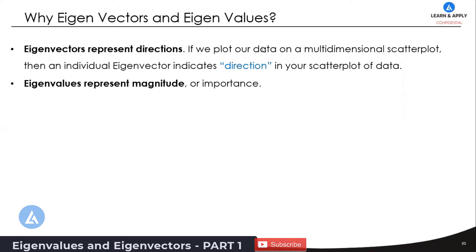Why are eigenvectors and eigenvalues important? Eigenvectors represent directions. As we know, vectors have both magnitude and direction. So eigenvectors represent directions. If you plot your data on a multi-dimensional scatter plot, each individual eigenvector indicates a direction in that scatter plot. So if we take multiple variables and want to understand the relationship between our response and those variables, the direction tells us whether increasing a variable leads to an increase or decrease in the response.